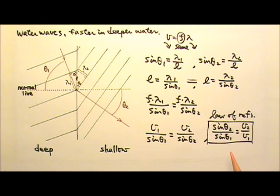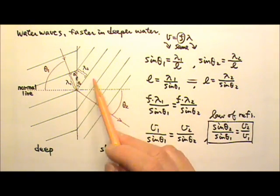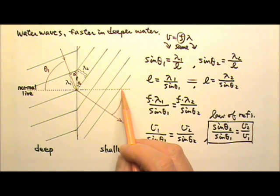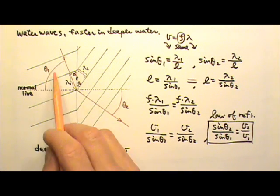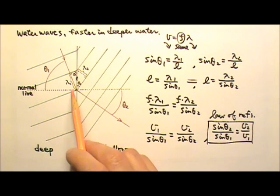Another thing is, whichever side that has the faster speed, say the V1 side, also has to have a bigger sine theta, which means a bigger theta. So the faster side has a bigger angle, the slower side has a smaller angle. And these angles of incidence or the angle of refraction are always measured between the ray and the normal line.